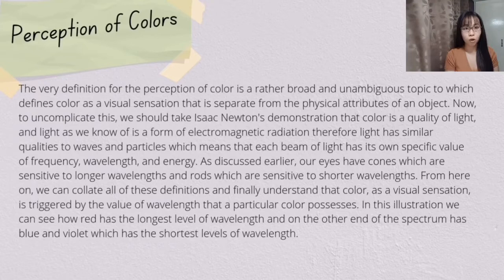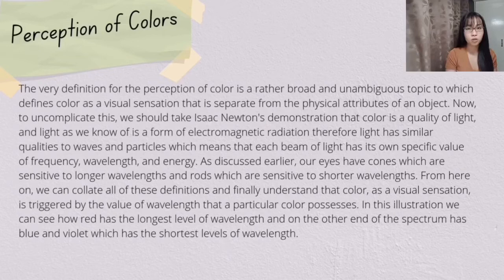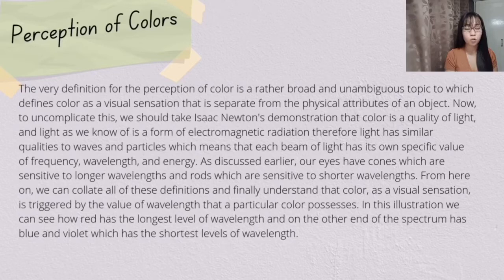The very definition for the perception of color is a rather broad and ambiguous topic, which defines color as a visual sensation that is separate from the physical attributes of an object. To uncomplicate this, we should take Isaac Newton's demonstration that color is a quality of light, and light as we know is a form of electromagnetic radiation. Therefore, light has similar qualities to waves, which means that each beam of light has its own particular value of energy, wavelength, and frequency.